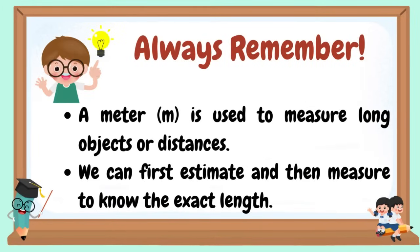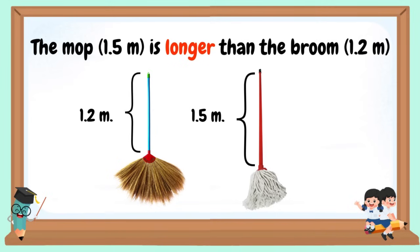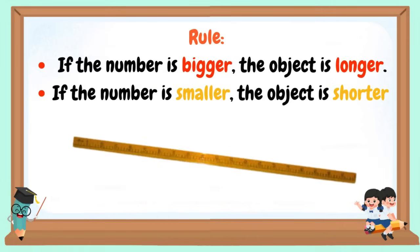Always remember: a meter is used to measure long objects or distances. We can first estimate and then measure to know the exact length. Which do you think is longer? The mop, which is 1.5 meters, is longer than the broom. Rule: If the number is bigger, the object is longer. If the number is smaller, the object is shorter.